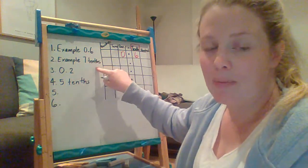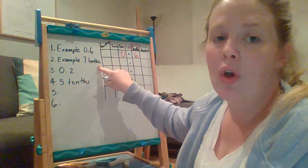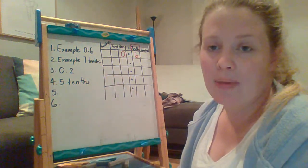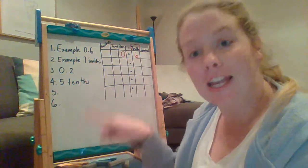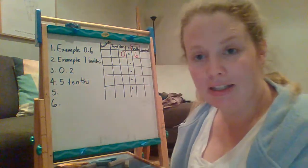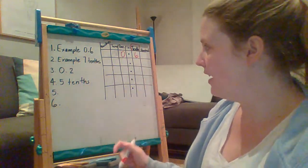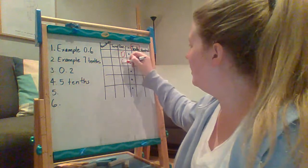Seven tenths. Now, this is where it might get a little bit trickier, because we've written it as a word rather than as the decimal, but we're going to turn it into a decimal using the table. So seven tenths would look like this.